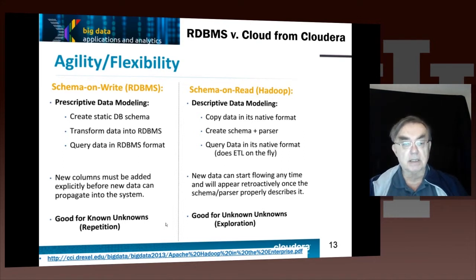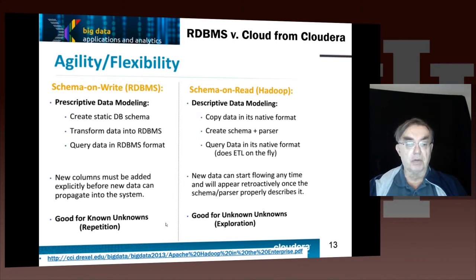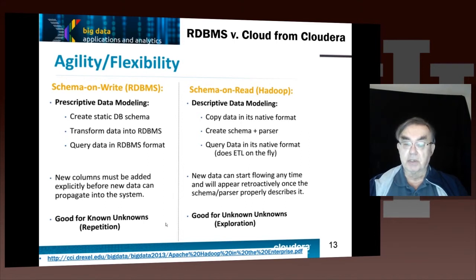To summarize: relational databases are good for known unknowns — repeating an analysis. Hadoop is good for unstructured search and exploratory research, where you're looking for unknown unknowns — exploration.